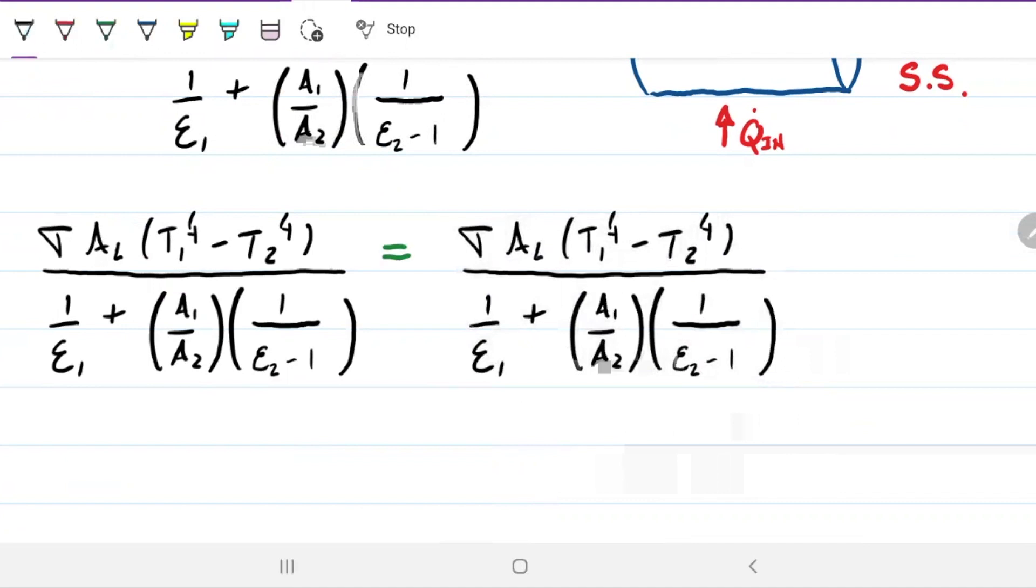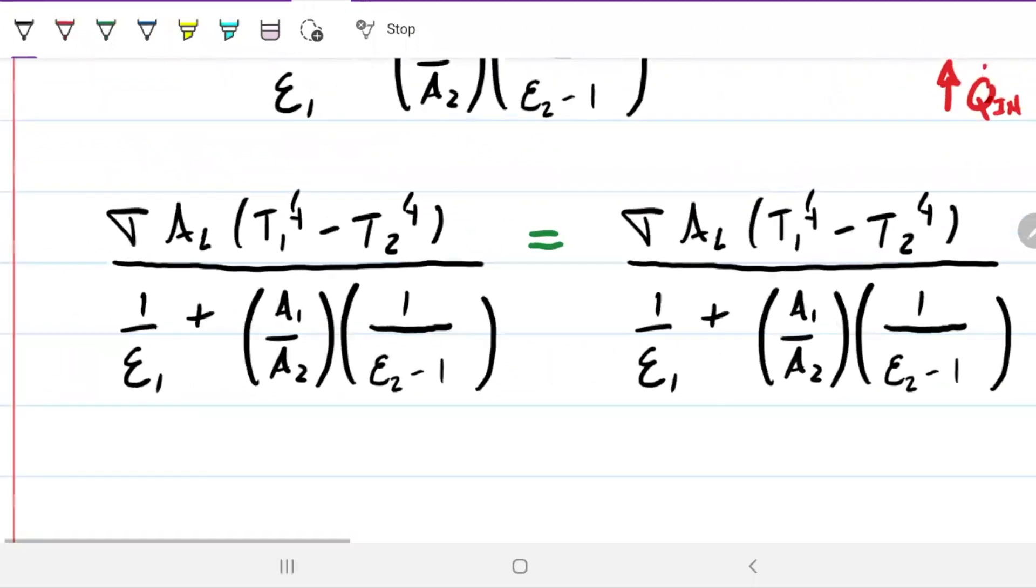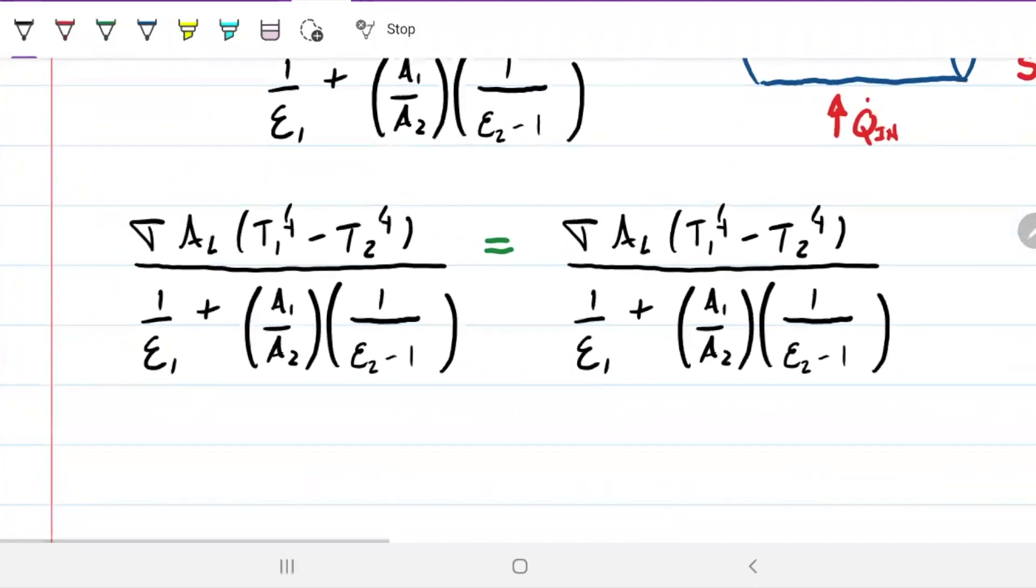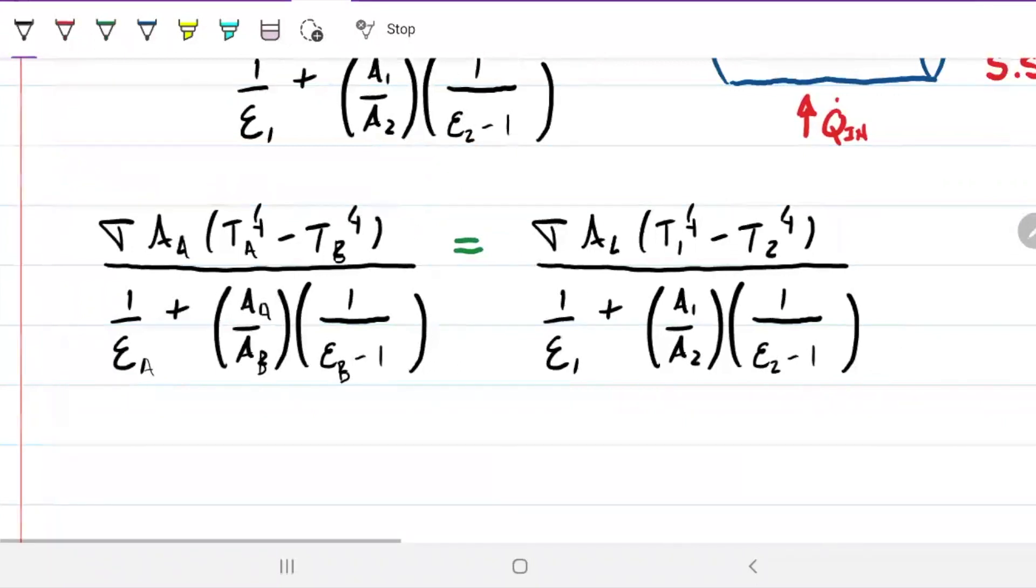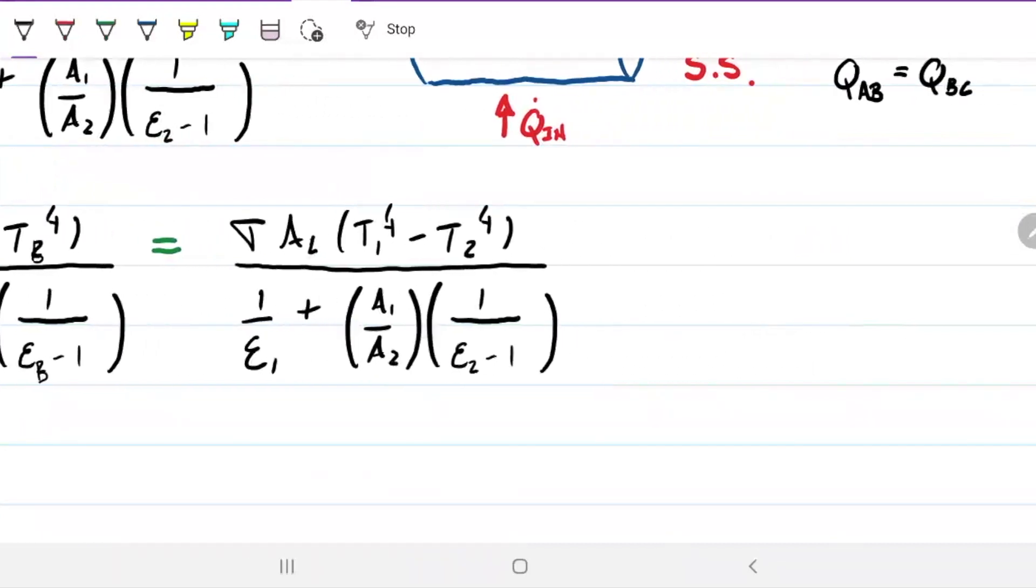And on this side here, I have A to B. So let's put down the actual things for A and B: area of A, temperature of A, temperature of B, emissivity of A, area of A, area of B, emissivity of B. And over here, it's from B to C: area of B, temperature of B, temperature of C, emissivity of B, area of B, area of C, emissivity of C.